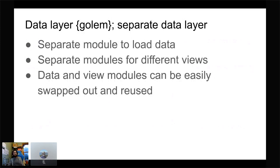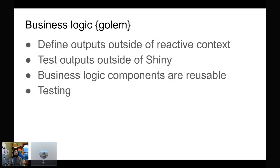Golem is really useful here because the data layer is totally separate from the rest of the application — there's a separate module for the data and a separate module for each view. That's very liberating on the Shiny side because you can swap modules out and reuse them. Thinking about the business logic aspect, this is more just good practice in Shiny than Golem specifically, but Golem does help you work this way. You define all outputs — like the table in the clinic view — outside the reactive context, which allows good testing and makes those components reusable for R Markdown reports, APIs, or anything else.